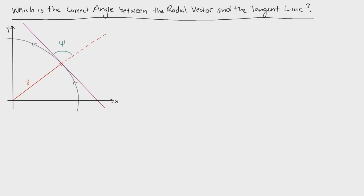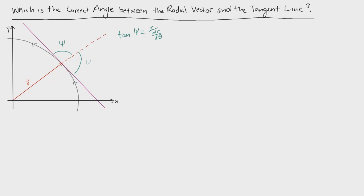Welcome back everybody. Today we'll be answering this question: which is the correct angle between the radial vector and the tangent line? In the previous video we defined tangent phi as the ratio between r and the derivative of r with respect to theta. In this picture, this is actually the correct angle of phi, and not this angle over here.